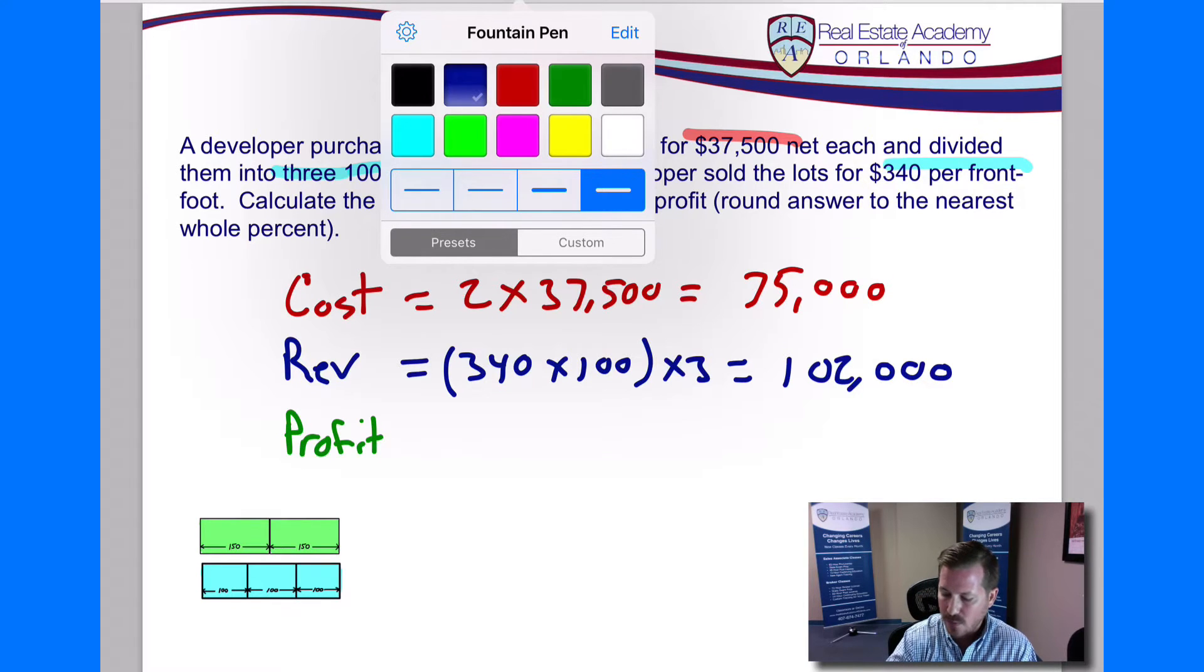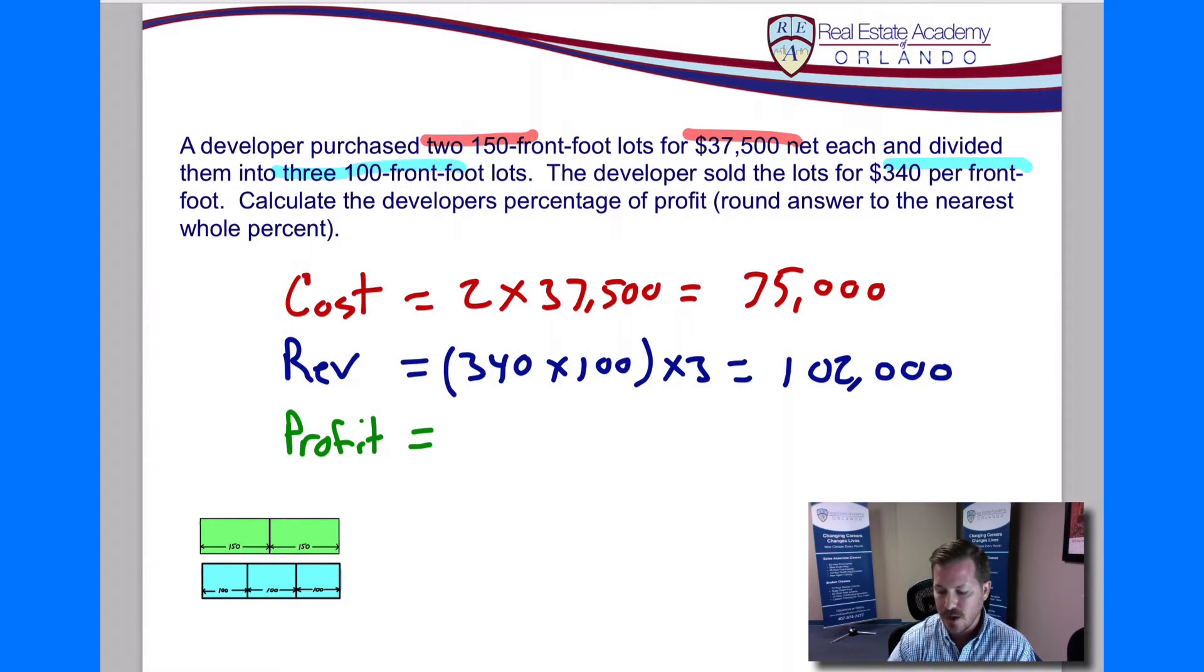So now we've got our revenue and we've got our total cost. Now we're just going to figure out what our profit is. If it costs us $75,000 and we brought in $102,000, that means our profit is going to be $27,000. So let's take our profit, take our revenue, $102,000, minus out our total cost of $75,000, and that gives us a profit of $27,000.